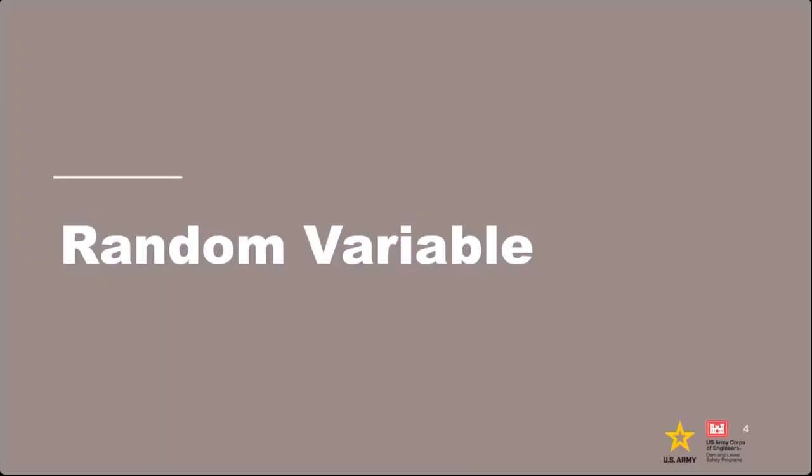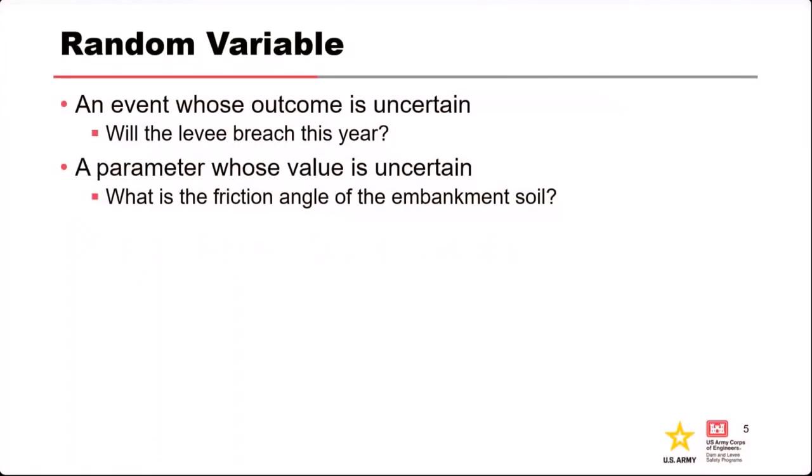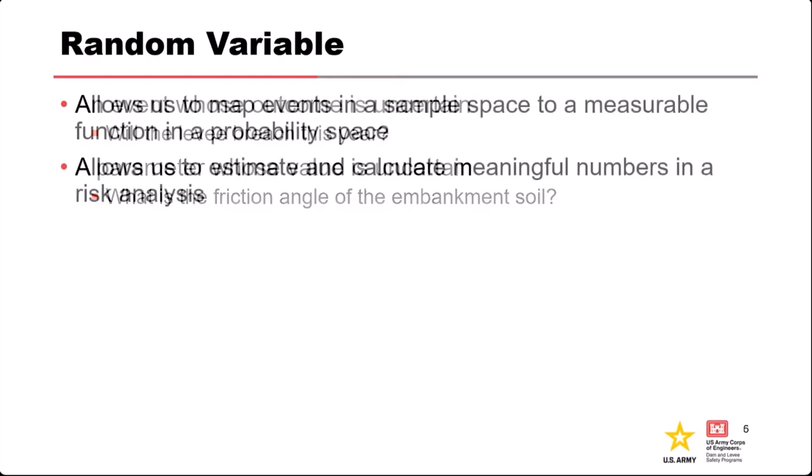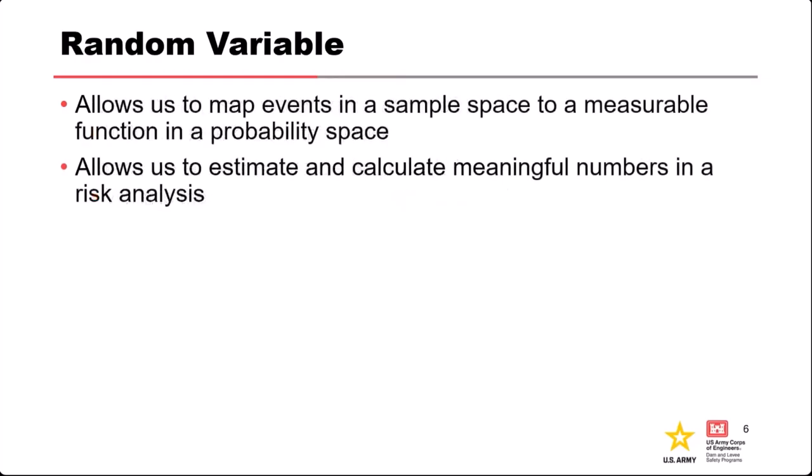So what is a random variable? A random variable is an event or parameter whose value is unknown or uncertain. Event-wise, the question might be: will the levee fail this year? Or as a parameter: what's the friction angle of the embankment soil? You can probably think of hundreds of examples of things that are random variables that we deal with in risk analysis.